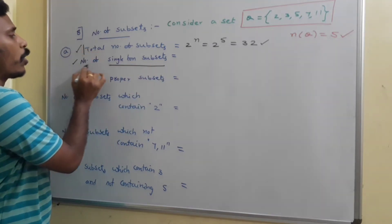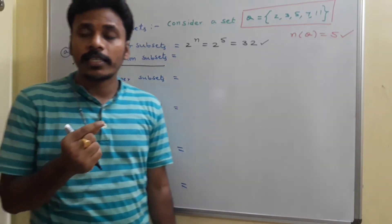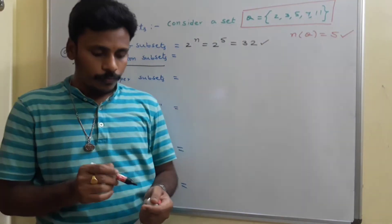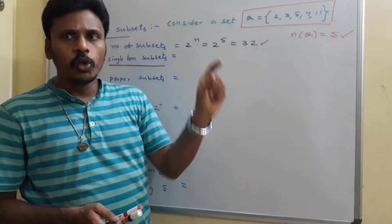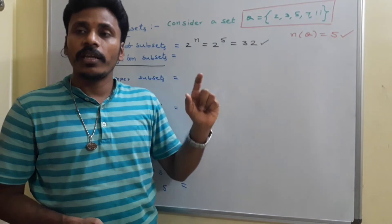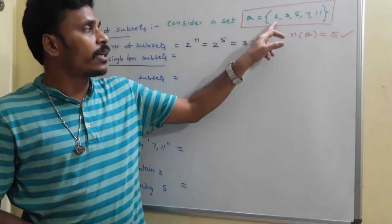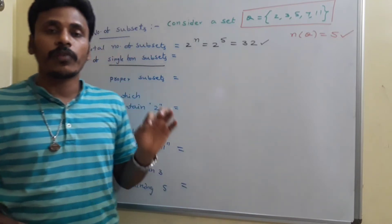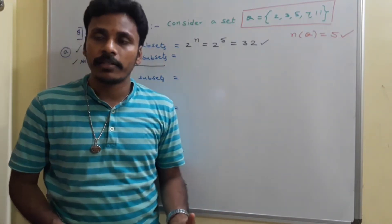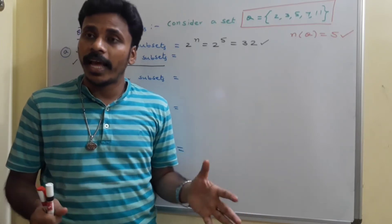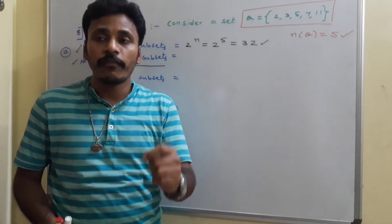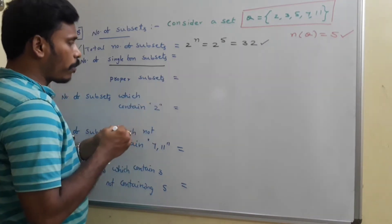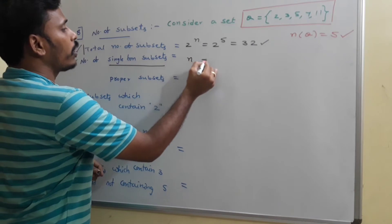The second question asks for the number of singleton subsets. A singleton subset is a set having only one element, and specifically here it is a subset of Q. So {2}, {3}, {5}, {7}, and {11} are all singleton subsets of Q — there are totally five. In general, a set with n elements has n singleton subsets, since every element gives one singleton subset.